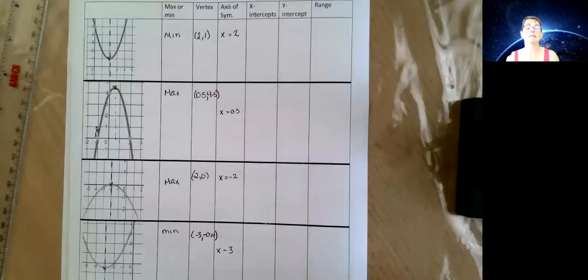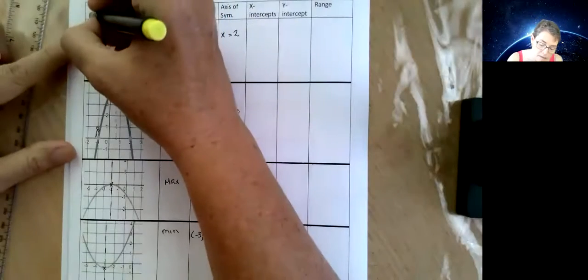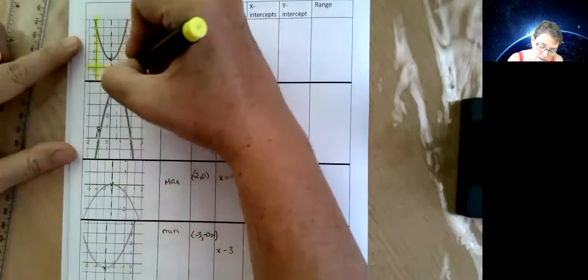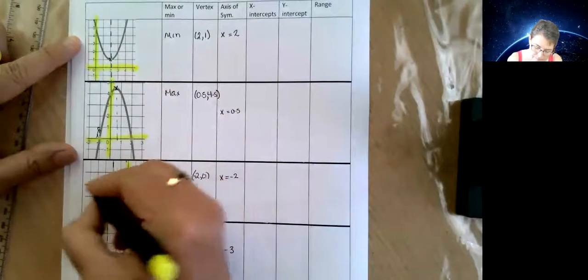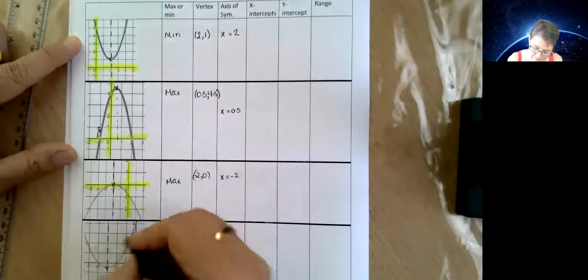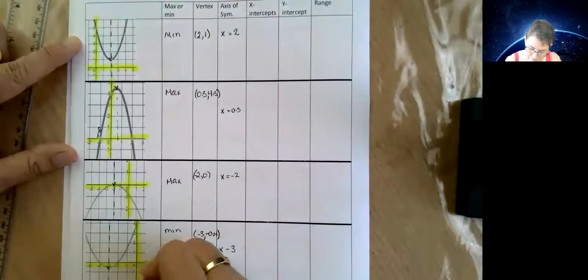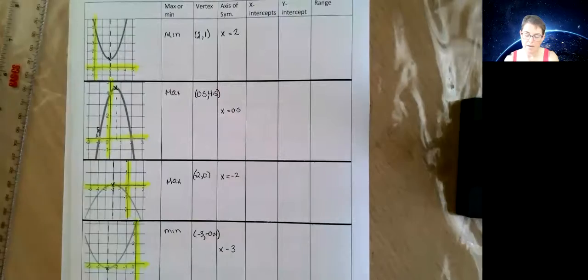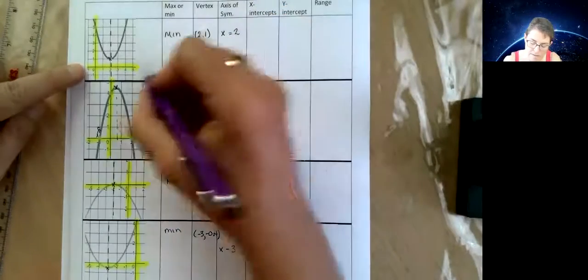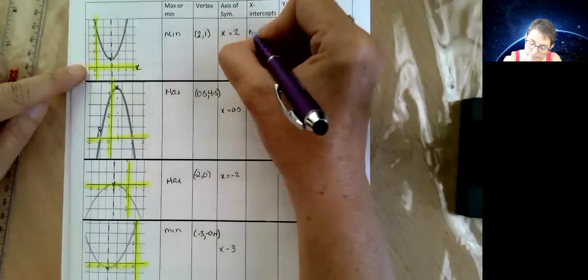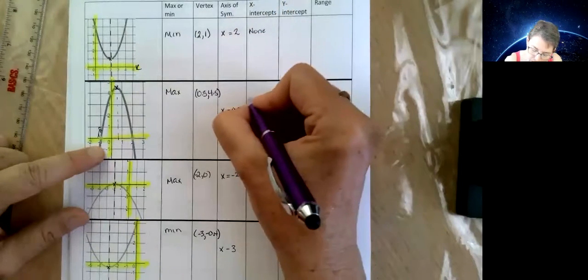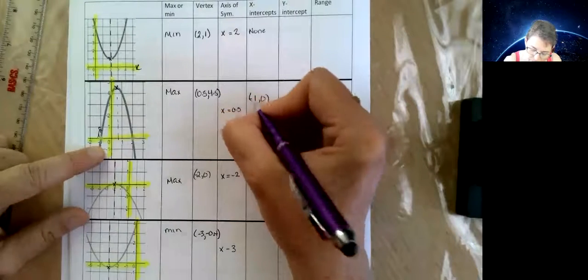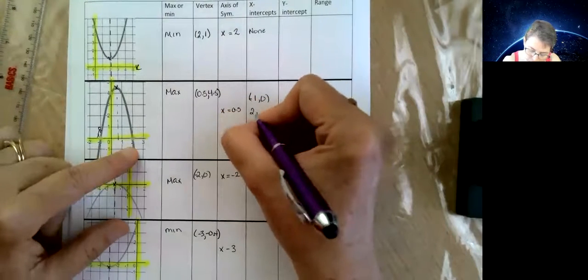Now we need to do our x intercepts. I said this before, and you know what, I should do it every time. Alright, so where's the cross the x axis. This one, none. On this one we got negative 1 and 0, and we got 2 and 0.